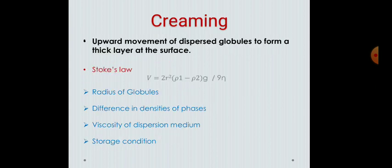The second problem is creaming. Creaming is the upward movement of dispersed globules to form a thick layer at the surface of the emulsion. Creaming is a temporary phase because it can be redispersed by mild shaking or stirring to get a homogeneous emulsion again. As far as possible, creaming of an emulsion should be avoided because it may lead to cracking with complete separation of two phases. Creaming can be explained by Stokes law.